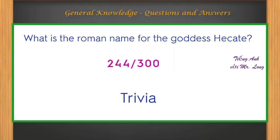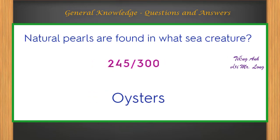What is the Roman name for the goddess Hercules? Trivia. Natural pearls are found in what sea creature? Oysters.